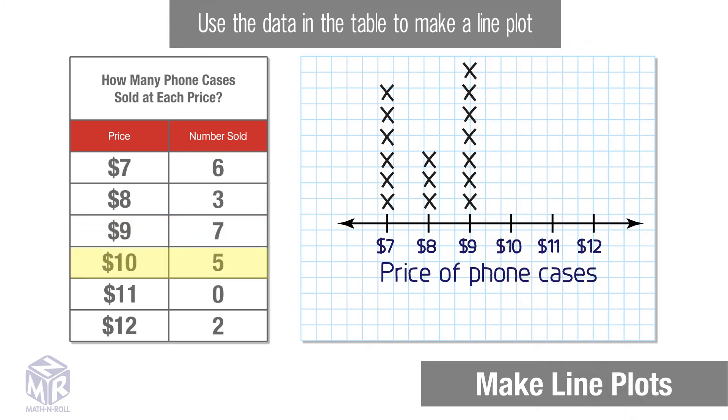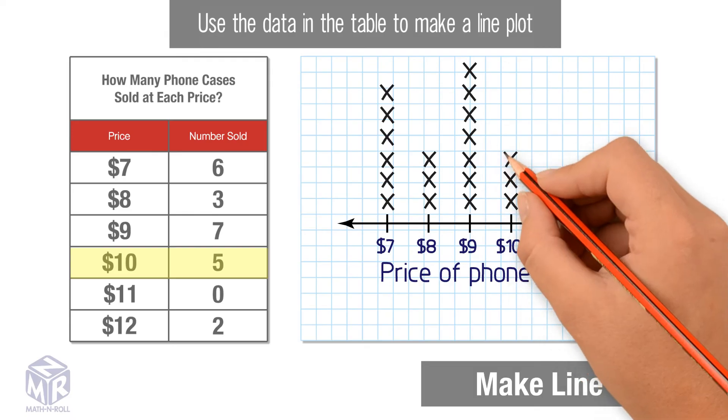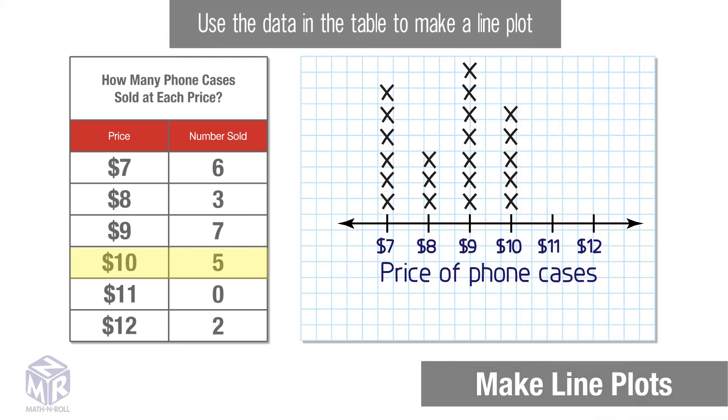Five cases were sold for $10, so we draw five x's. Zero cases were sold for $11, so we don't draw any x's above 11. Two cases were sold for $12, so we draw two x's.